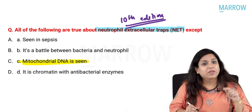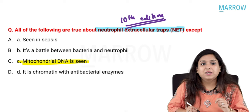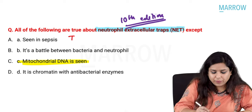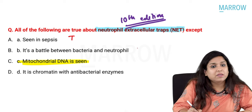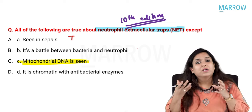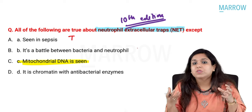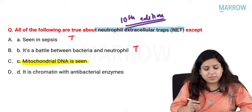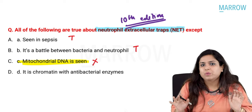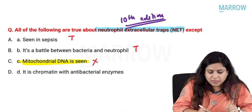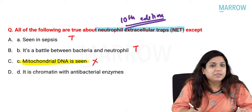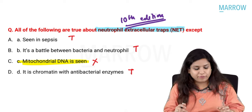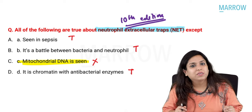Looking at the options: it is seen in sepsis — absolutely true. It is a battle between bacteria and neutrophils — also true, these are extracellular fibrillar meshwork produced by neutrophils. Mitochondrial DNA is seen — no, there is no relation with mitochondrial DNA. It is chromatin with antibacterial enzymes — that is absolutely correct. So the false statement is that mitochondrial DNA is seen.